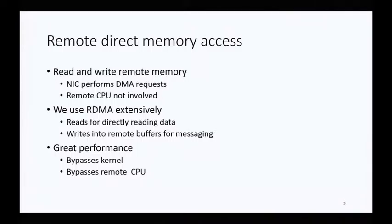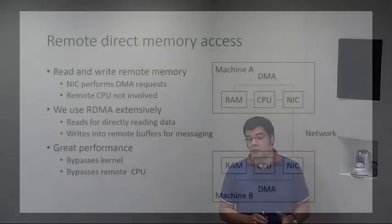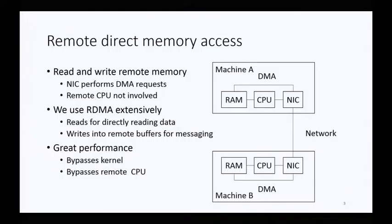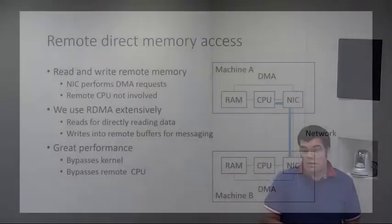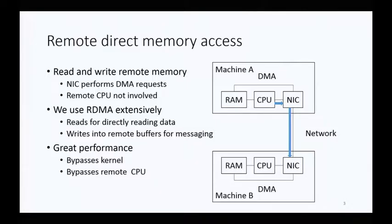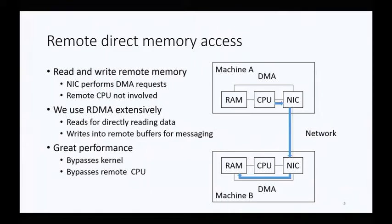These networks have RDMA primitives — Remote Direct Memory Access — which enable reading and writing data in memory of remote machines. Essentially, the NIC on the remote machine performs a DMA request on behalf of the sender. For example, machine A wants to read data from memory of machine B. The CPU on machine A initiates the request with the local NIC, which sends it to the NIC on machine B. With RDMA, the NIC does not interrupt the CPU — it directly sets up the DMA transfer, fetches the data, and sends it back to machine A.